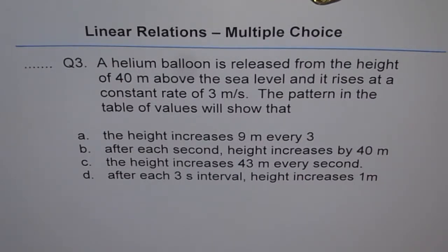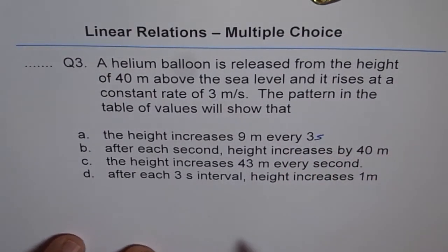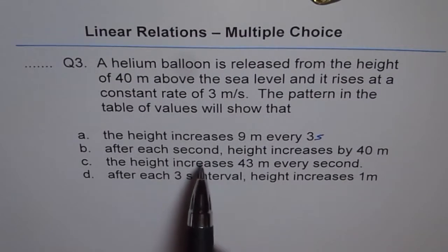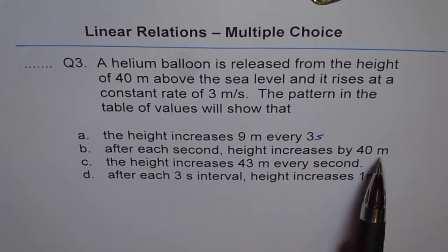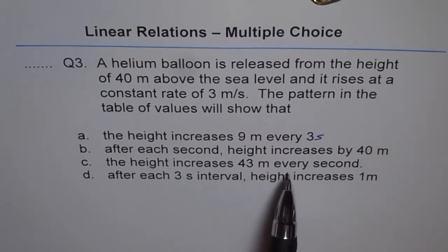The pattern in the table of values will show that height increases 9 meters every 3 seconds - I should write seconds here. Option B is after each second height increases by 40 meters. The height increases 43 meters every second. After each 3 second interval height increases 1 meter.